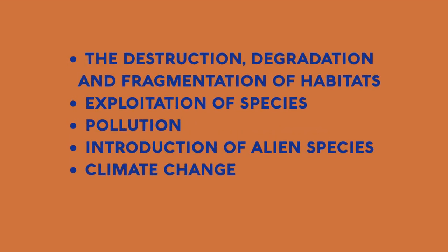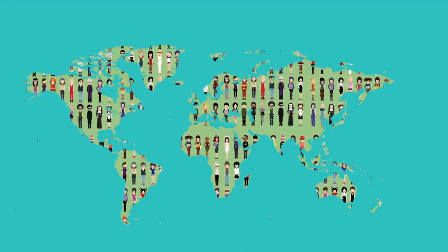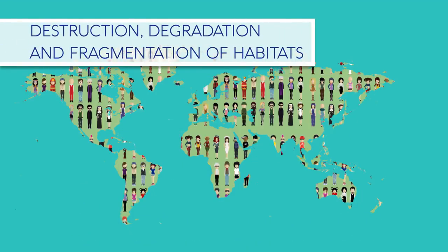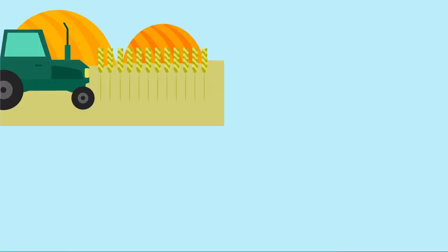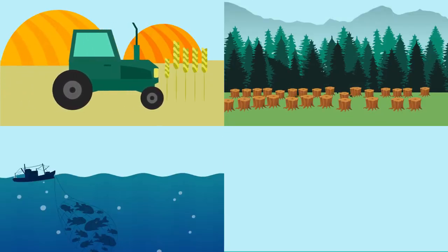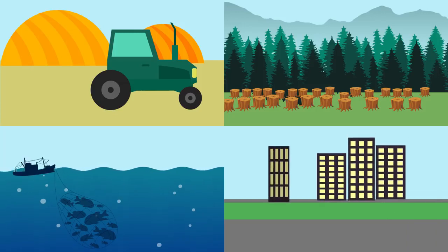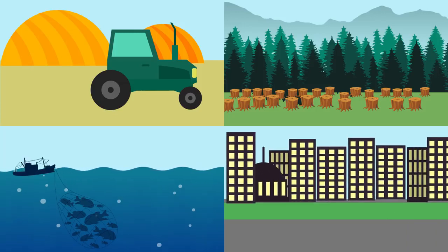Here are some of the main human-induced threats facing biodiversity. As the world population has grown from 1.5 billion in 1900 to nearly 7.5 billion people today, land use has changed. Habitats have been destroyed in favour of agriculture, forestry, fishing, urbanisation and manufacturing. Unsurprisingly, habitat loss has greatly reduced species richness.